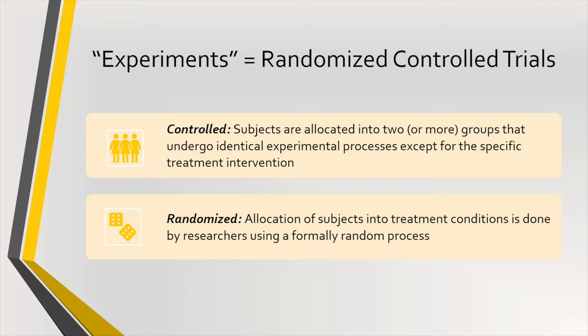There are two important terms in randomized controlled trial. The first is 'controlled' — subjects are allocated into two or more groups that undergo an identical experimental process except for the specific treatment intervention. The researcher experimentally manipulates the value of the independent variable for one group and not another. The second central part is 'randomized' — allocation of subjects into groups is done by researchers using a formally random process. We're not talking about natural experiments or quasi-experiments; we mean researchers conducting the randomization and comparing groups across different metrics.